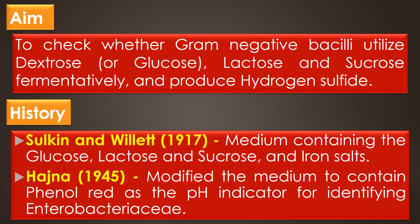History. In 1917, Sulkin and Willett described a medium containing carbohydrates like glucose, lactose, and sucrose and iron salts. The medium showed fermentation of these carbohydrates as well as hydrogen sulfide production. Hasna modified the medium in 1945 to contain phenol red as the pH indicator for identifying Enterobacteriaceae, and this is the formulation still in use today.